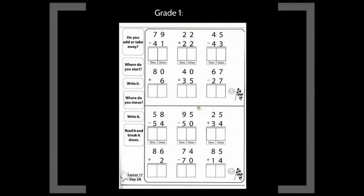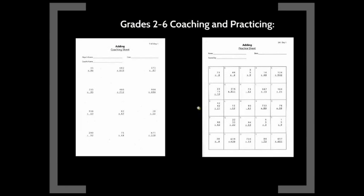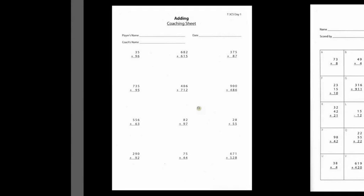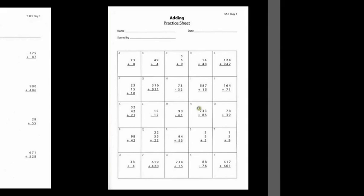This is a grade one worksheet and the coach will first ask the player to identify the operation — if it's subtraction or addition. They will then ask where they want to start and to write it down. The coach will then ask the player what's next, what's the next step, and then they want the player to write that down as well, and in the end they will break it down and then read it out loud. These are coaching and practicing sheets used from grades 2 to 6, and this coaching sheet is addition. The coaching worksheet will be completed by the students together — one will be the coach for the first half and then the player for the second half. The practice sheet is what the students will do individually to demonstrate their skills separately from each other.